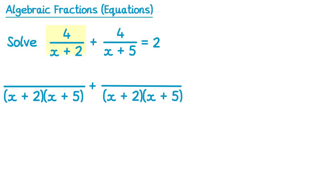Let's look at the left fraction first. To get from x plus 2 to x plus 2 multiplied by x plus 5, we obviously multiply by x plus 5. So we need to do this on the top as well — so we need 4 lots of x plus 5. And then for the second fraction, to get from x plus 5 to x plus 2 multiplied by x plus 5, we multiply by x plus 2. So on the top we need 4 lots of x plus 2. And of course the right hand side is still just 2.